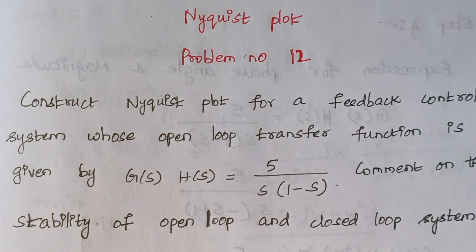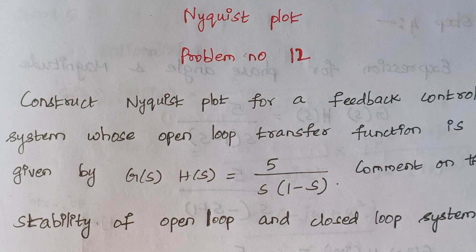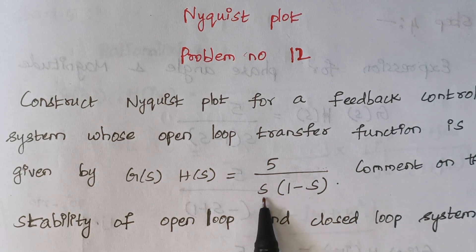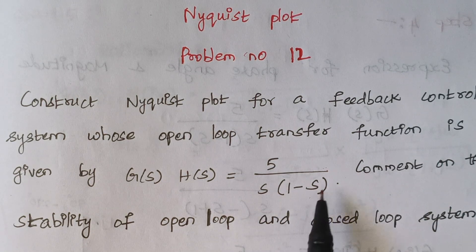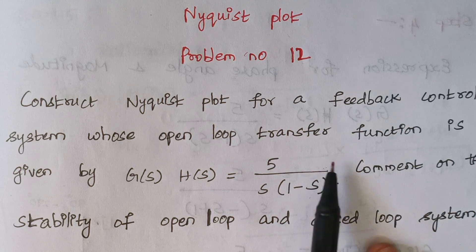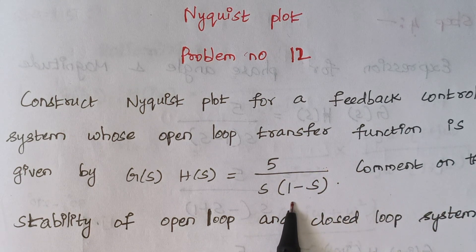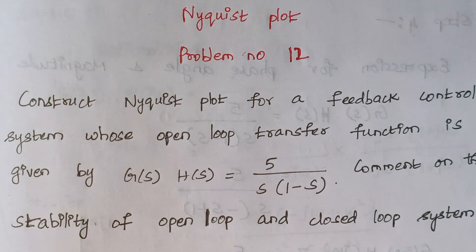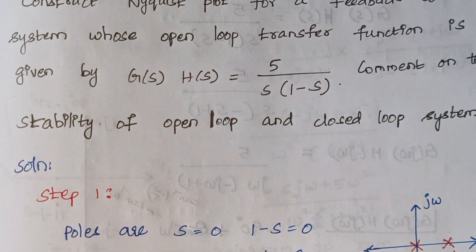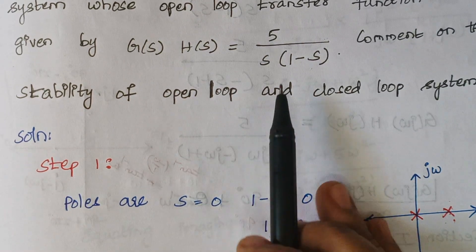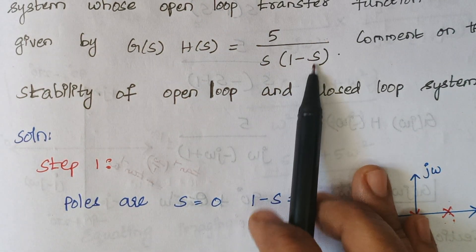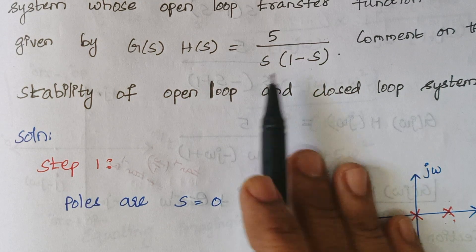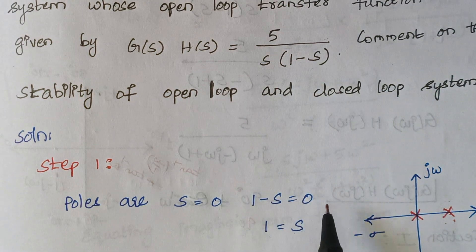Step 1 is to find the location of poles. Denominator terms are known as poles and numerator terms are known as zeros. In this problem there are no zeros, only poles, and there are 2 of them. We equate the denominator terms to 0: one pole is at s = 0, and equating 1 minus s = 0 gives s = 1.